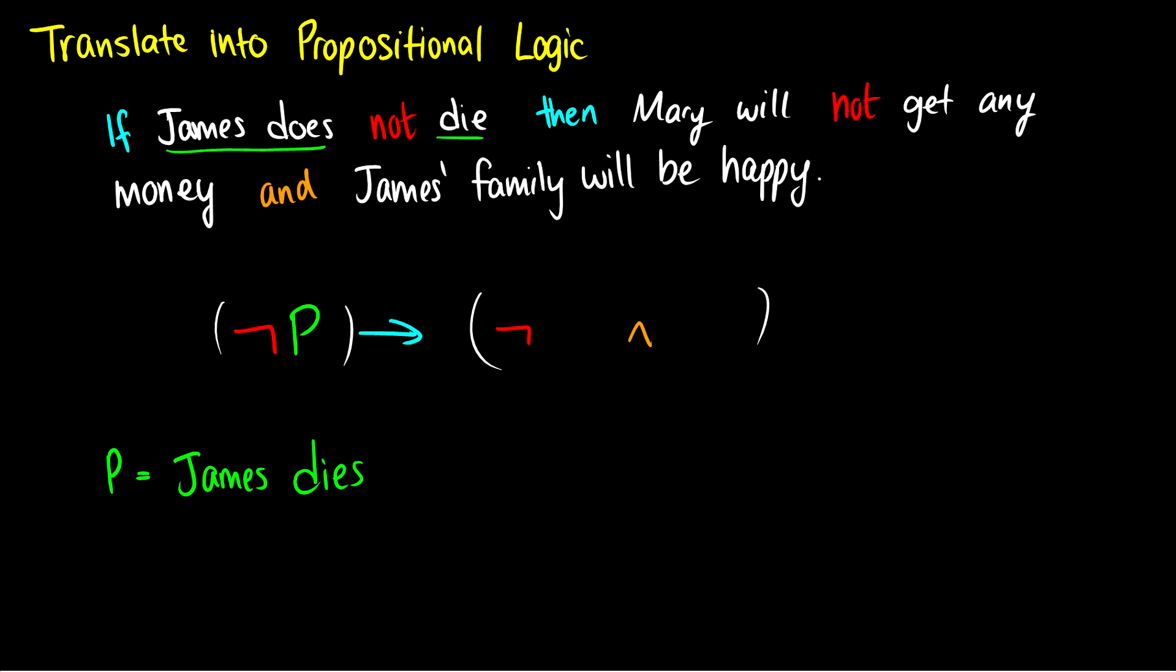So when we translate or give a key for our propositions, we want them to be an affirmative or a positive statement. We want not to be a connective that attaches to an affirmative statement. So if P is James dies, then not P would be James does not die. So the next one then, the next proposition, Mary will get any money, would be another statement or proposition. We wouldn't include not in there. So let's call that Q. Mary will get money. And I know it says will get any money, but the way that not works in English is we kind of need, or it's attached to not. If we say Mary will get any money, that sounds weird in English, so we just kind of alight it. So Mary will get money, so it'll be not Q.